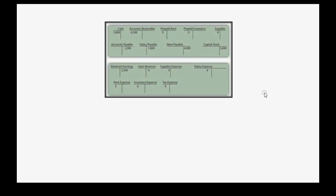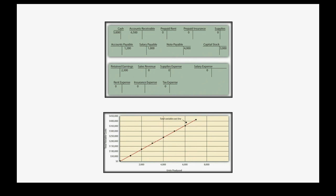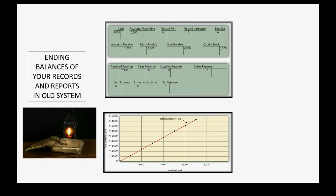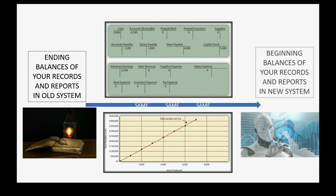We must find the ending balances of each account in our chart of accounts from the older system. Those results would usually go on management-related reports. But no matter how antiquated your system is or how advanced your new system is, the ending of the old must equal the beginning of the new in order for you to know that you did everything correctly.